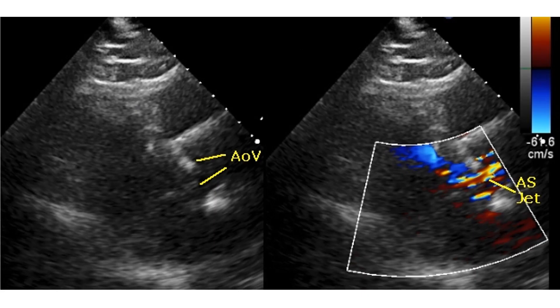This split-screen image is again from the parasternal long axis view, with the left panel showing the two-dimensional image and the right panel showing colour flow mapping overlay in the colour Doppler sector. Being of high velocity and with significant turbulence, it is seen as a mosaic jet. The width of the jet in the right panel fairly matches the leaflet separation in the left panel.